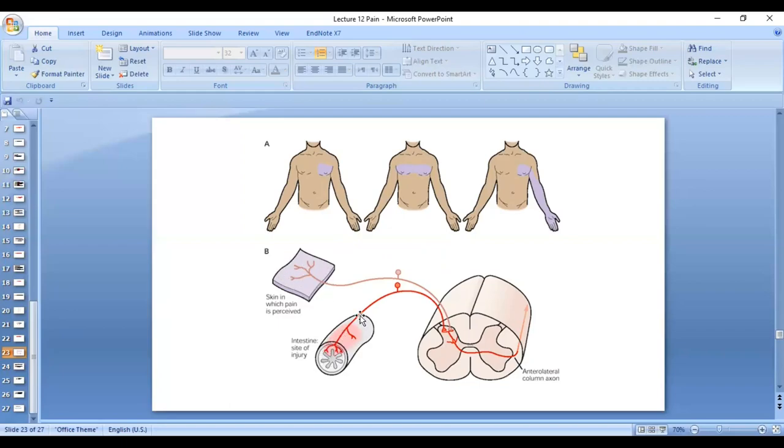Because the visceral nerve fibers which carry the pain sensations, and the fibers from the skin where the pain is perceived, they both converge on the same second-order neuron, and then it is carried to the CNS. So this convergence of both fibers causes the pain to be felt in the skin.